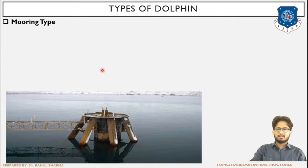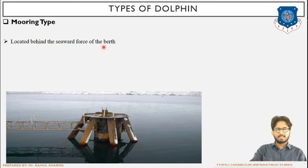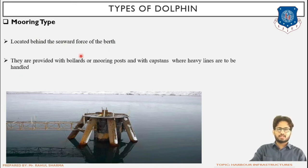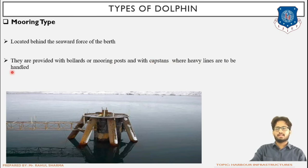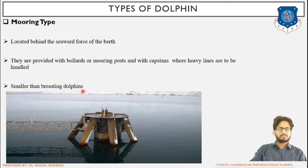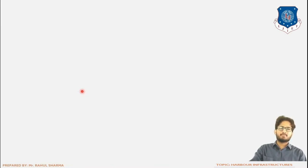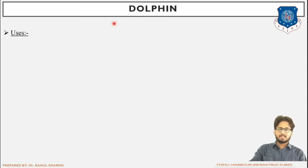Mooring dolphins are located behind the seaward course of the berth, as we have seen on the backward side. They are provided with bollards or mooring cleats — accessories with which the rope of the ship is tied up. A capstan is used for heavy lines when they are to be handled — it is specifically used for handling heavy ships. Mooring dolphins are smaller than resting dolphins, as already discussed.